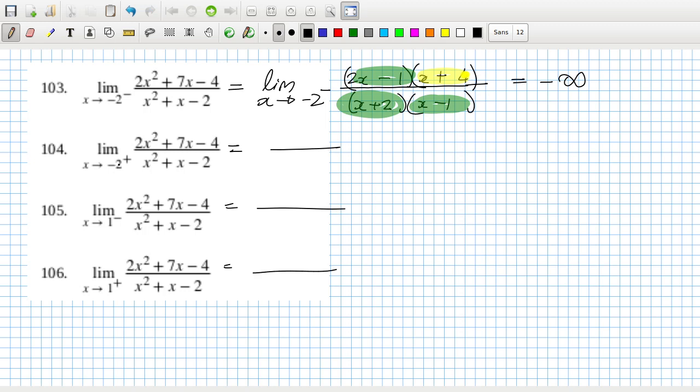So minus 2 but from the right. Well, that's still negative there, and then that will be positive. That would be positive, and then like this one, for example, that'll be negative. So that would be positive infinity.